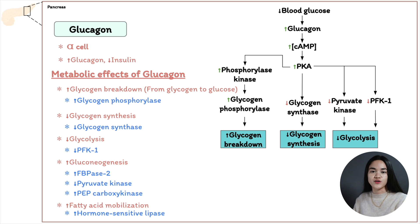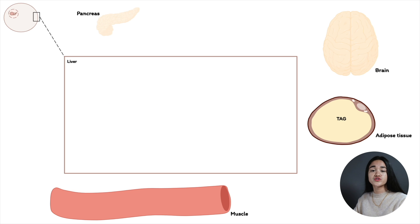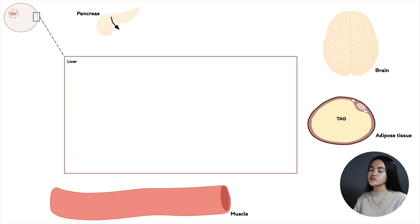Now let's look at what happens during a fasting state, several hours after a meal. We have three types of energy stores: glycogen stored in liver and muscle, triacylglycerol stored in adipose tissue, and proteins in our tissues. A few hours after a meal, we break down glycogen stores within about four hours. Insulin release slows down and glucagon release increases.